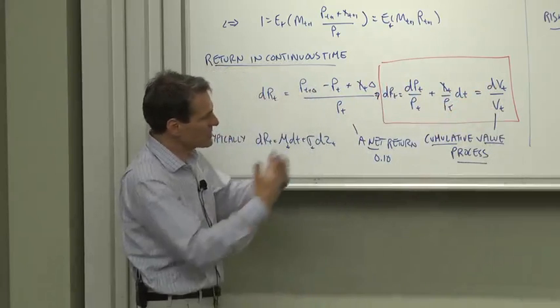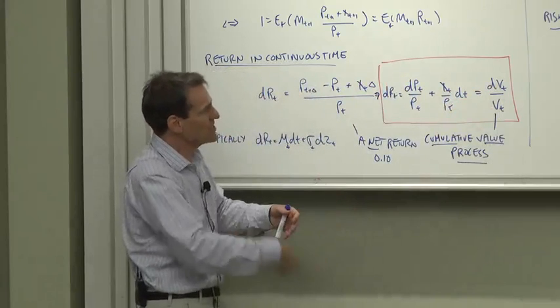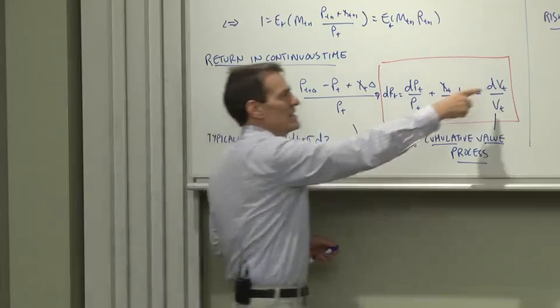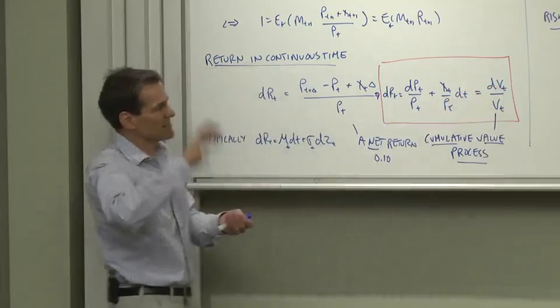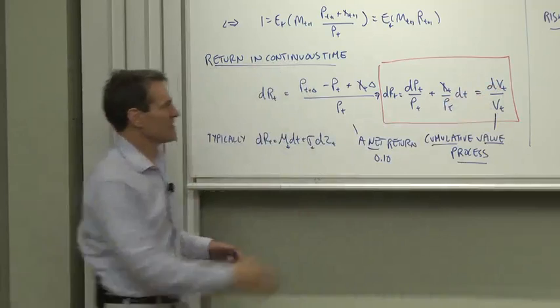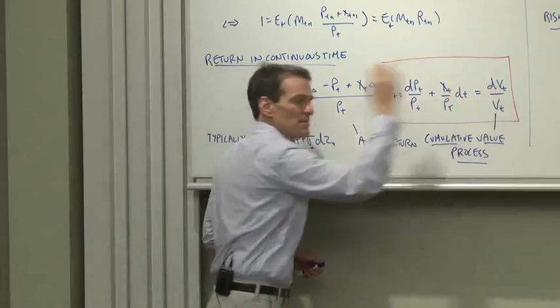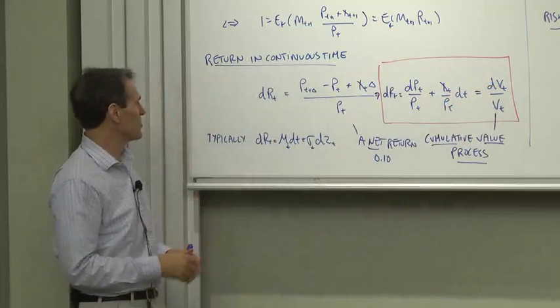V corresponds to the idea of put the stock in a fund where all the dividends are continually reinvested, and then V is the price, it's the value of that fund. It's sometimes convenient to look at that way, sometimes convenient to look at that way, choose whatever's more convenient.